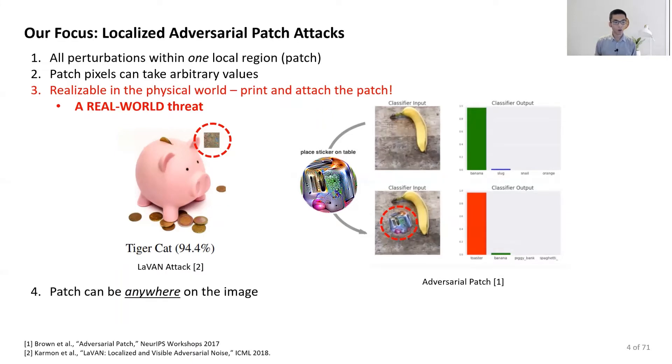Furthermore, we assume the patch can be anywhere on the image, and the patch size should be reasonable, not blocking the entire object. Knowing what the attack is, our defense objective is provable robustness for certified test images.